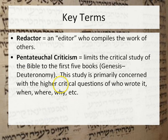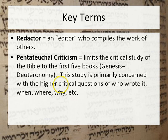A redactor is the term used to describe an editor who compiles the work of others. Pentateuchal Criticism limits the critical study of the Bible to the first five books — Genesis to Deuteronomy — and is primarily concerned with the higher critical questions of who wrote it, when did they do it, where, and why.